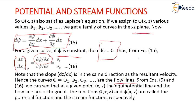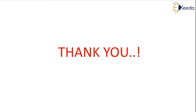From equations 9 and 16, at any point x comma z the equipotential line and the flow line are orthogonal to each other, that is 90 degrees to each other. So the functions phi of x comma z and psi of x comma z are called the potential function and the stream function respectively. Thank you.